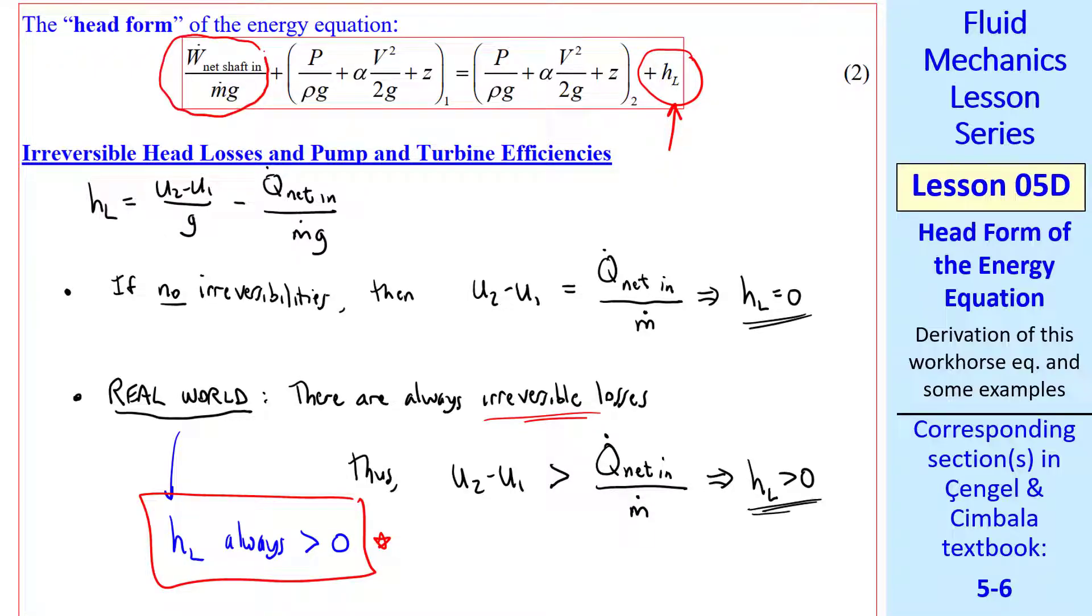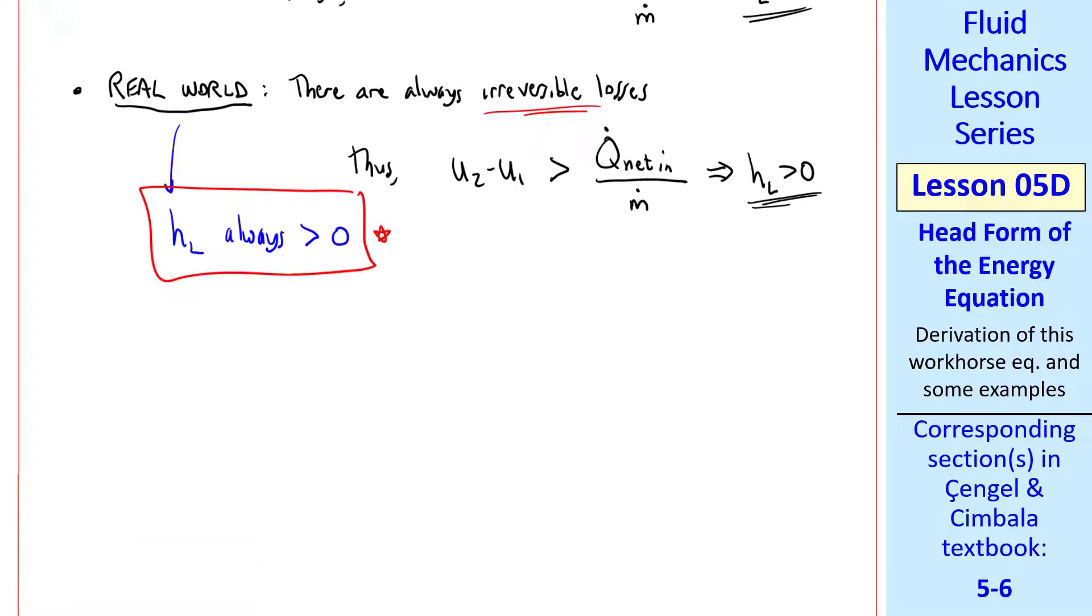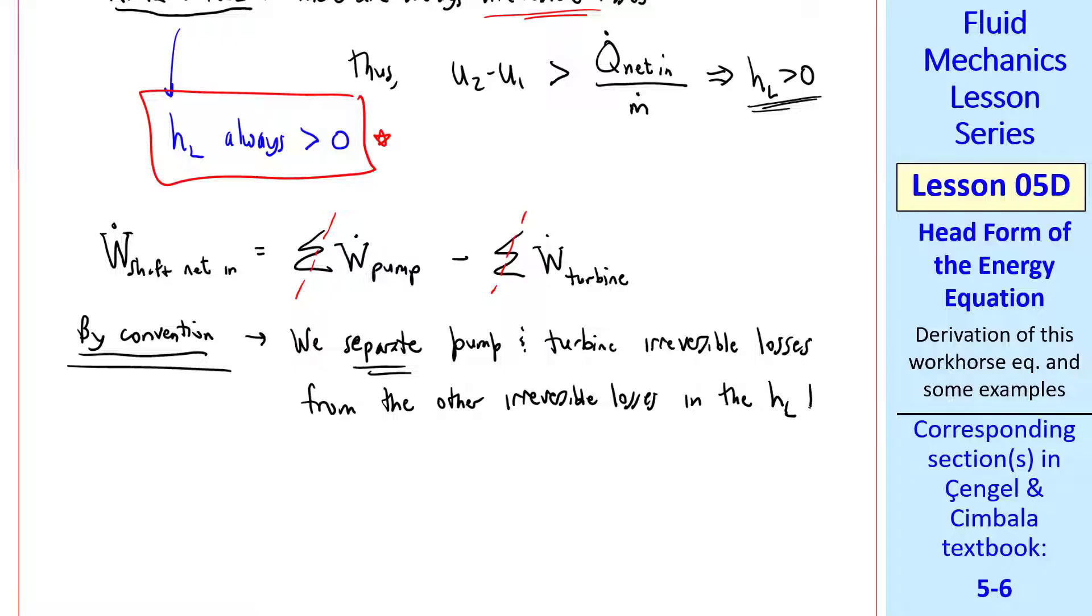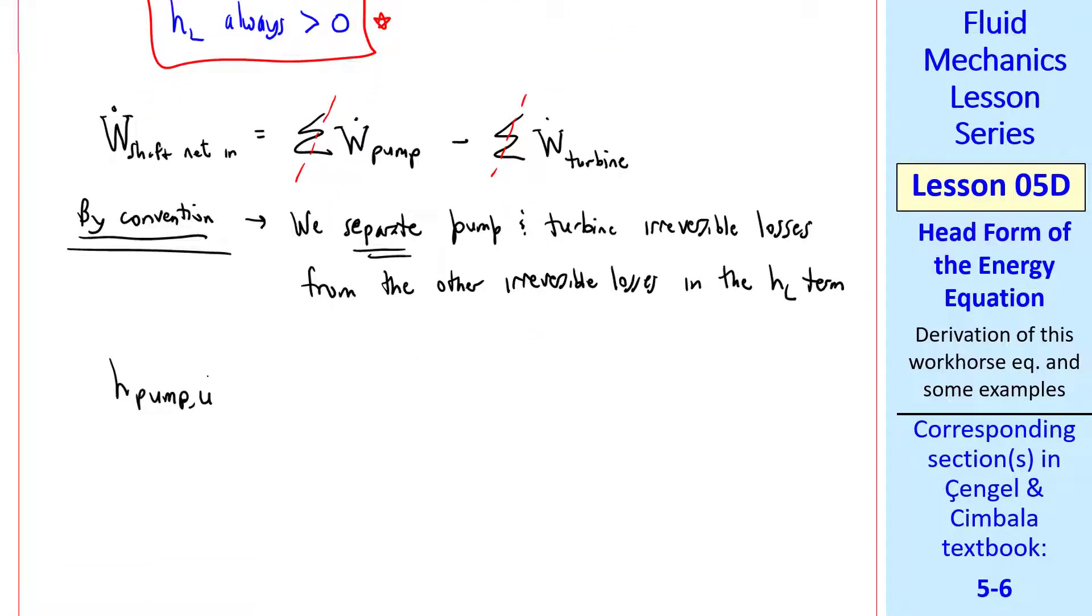Now let's talk about this shaft power. We're going to split it into pumps and turbines. Let's let W dot shaft net in equal a summation of all the pumps in our control volume minus a summation of all the turbines in our control volume. In most of our problems, we only have one pump or one turbine, and usually only one or the other. So we don't need the sigmas, although if you have pumps or turbines in series, you can add the sigmas back in. By convention, we separate pump and turbine irreversible losses from the other irreversible losses in the HL term. In other words, we treat pump and turbine losses separately.